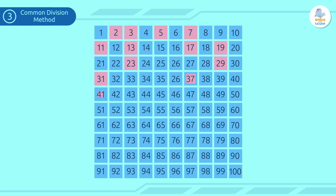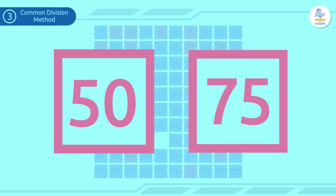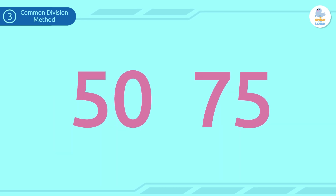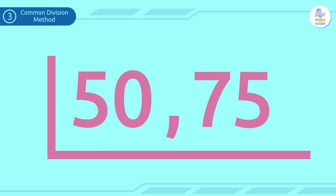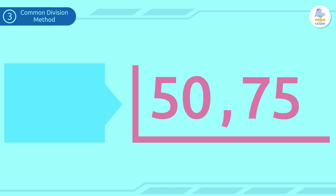Here's an example: we're going to find the least common multiple of 50 and 75. We begin by writing the numbers separated by a comma, then draw a line to the left of the first number and under both. Now we need to think of the smallest prime number that is a common factor of 50 and 75.